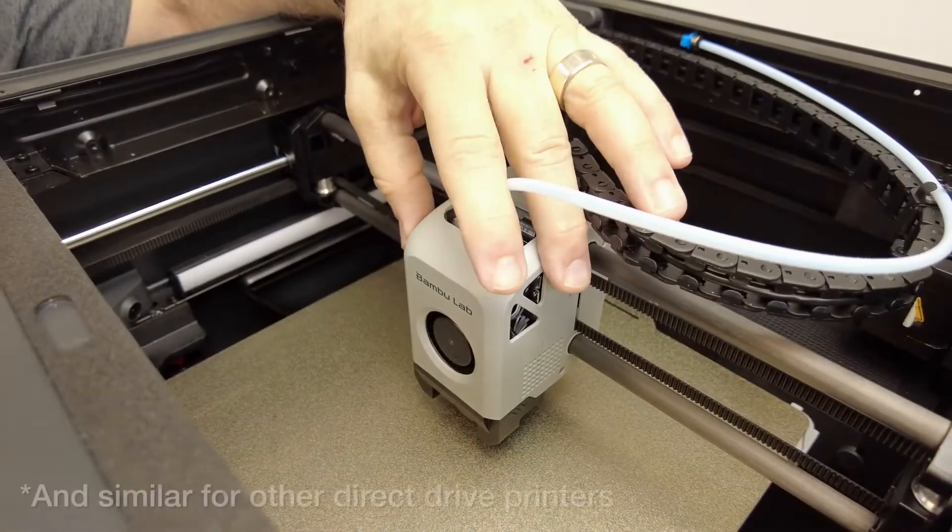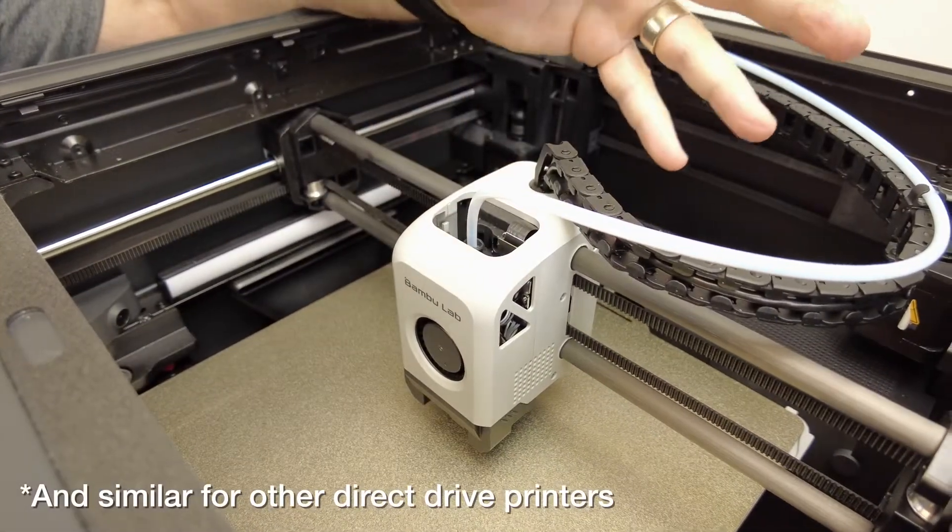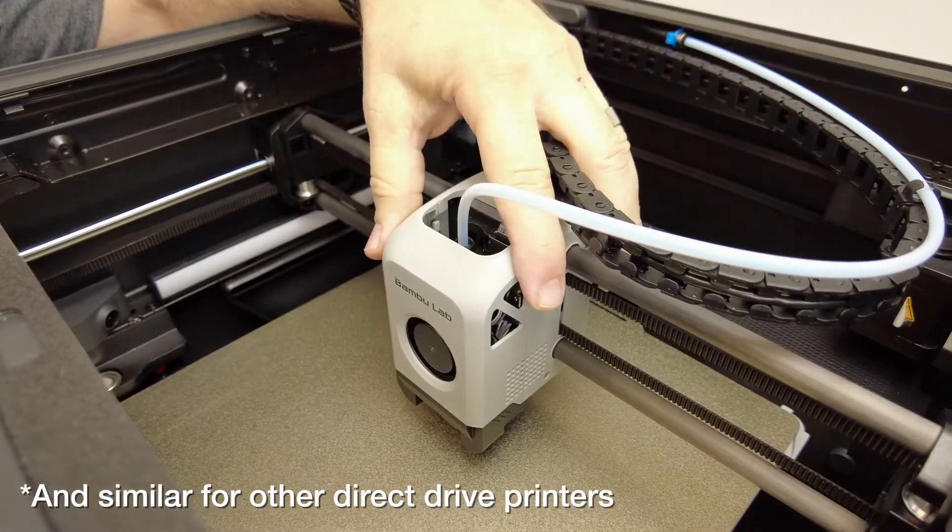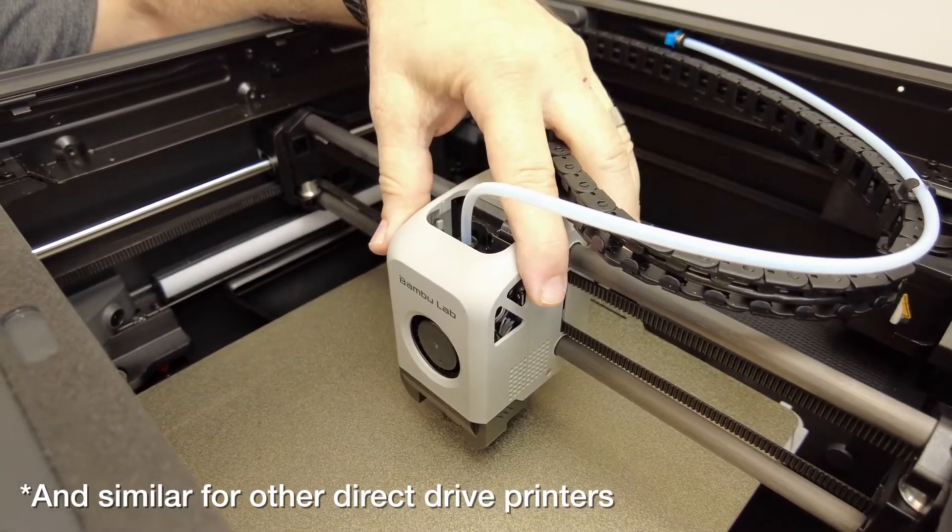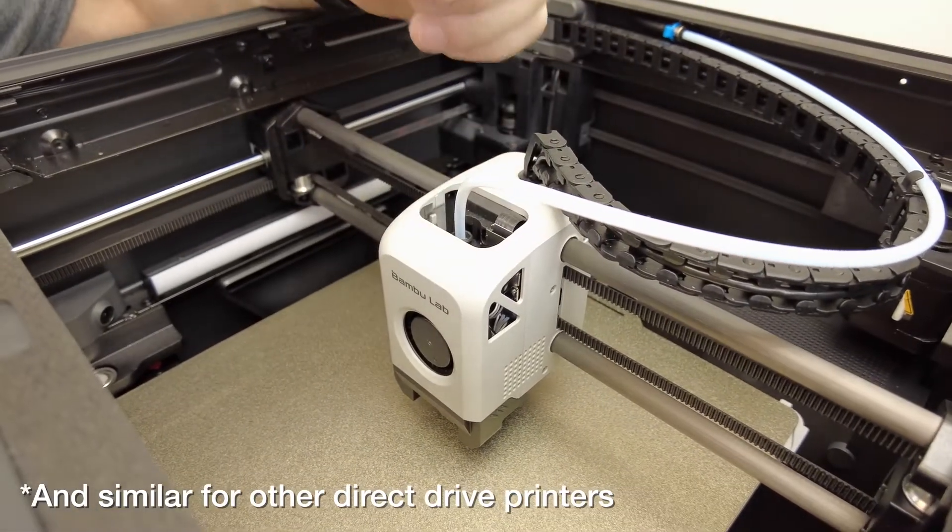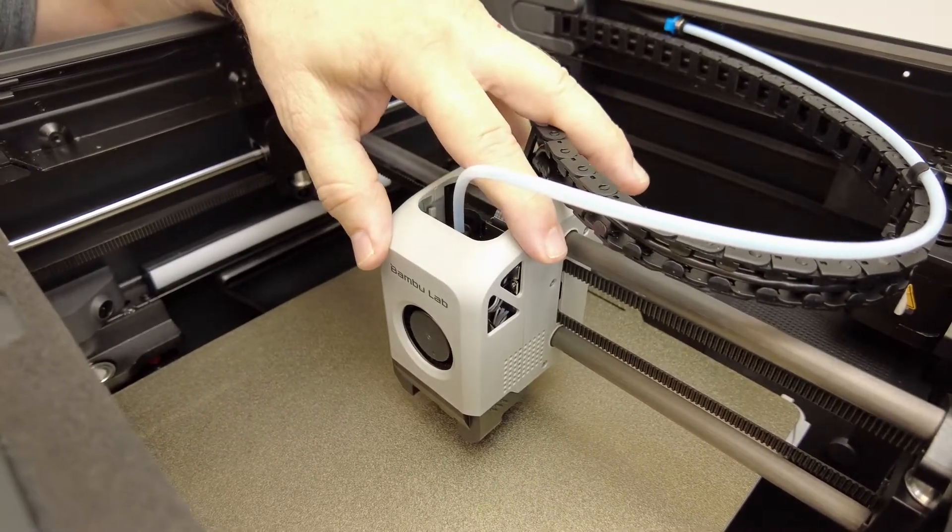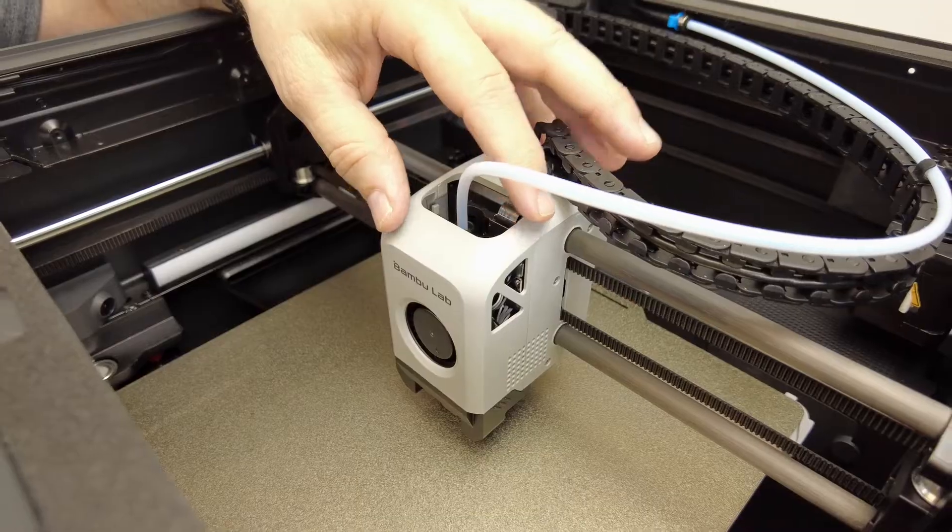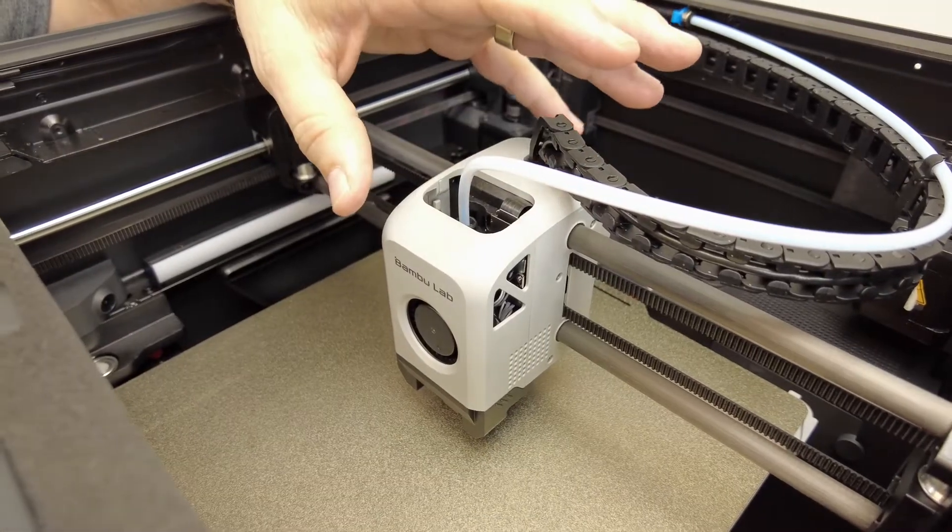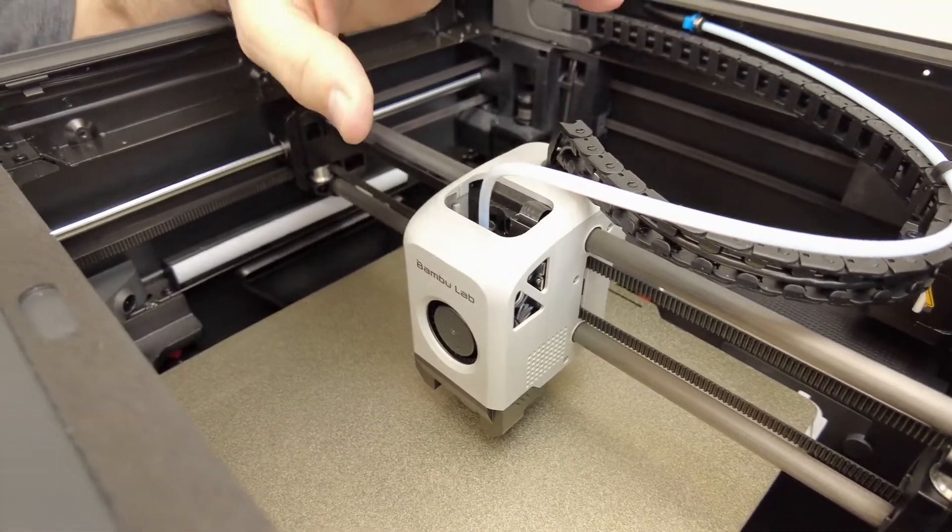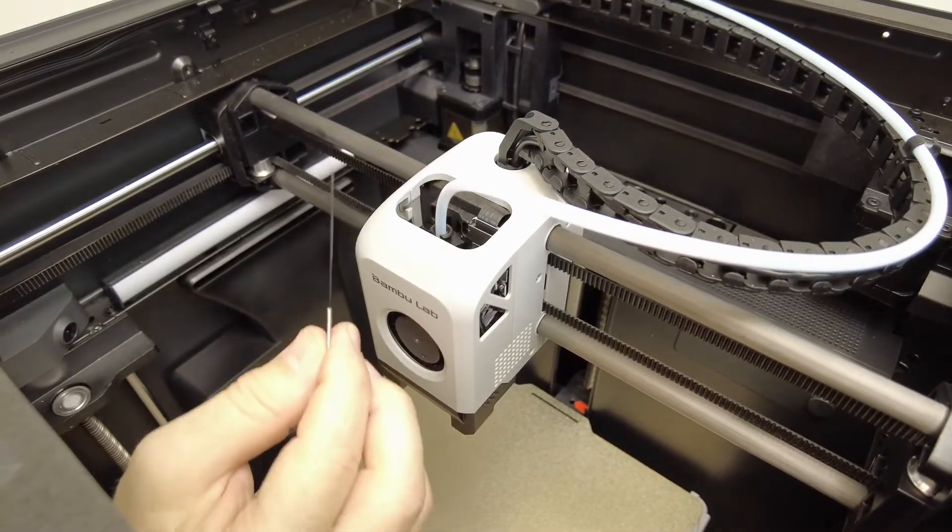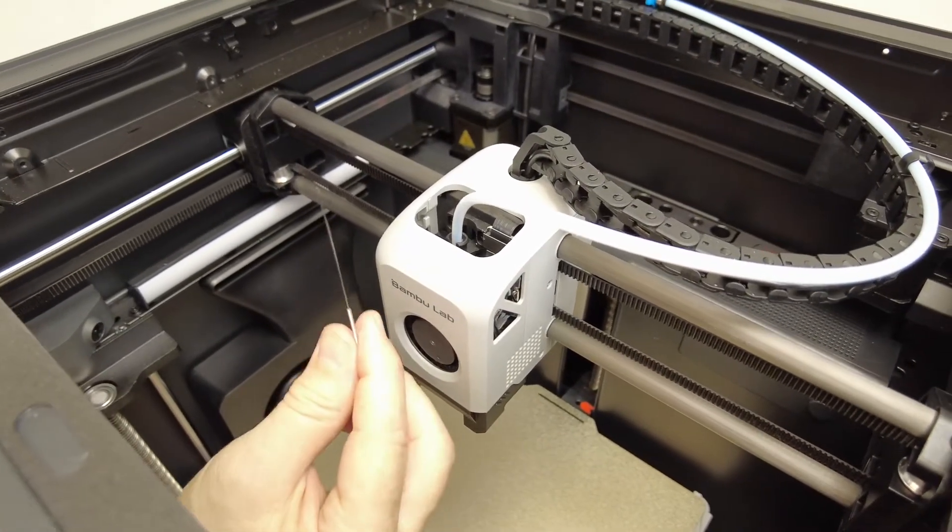So in the case of a clog on a Bamboo, the first thing we want to do as always is heat the nozzle up beyond the print temperature and try with the nozzle needle to clear it from below. And if that doesn't work, we're going to try first to operate on the hot end while it's still on the machine. And if that doesn't work, we'll show you how to take it off and operate on the table.